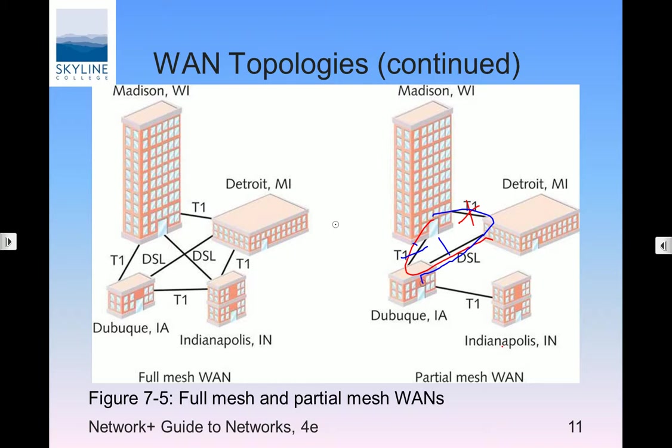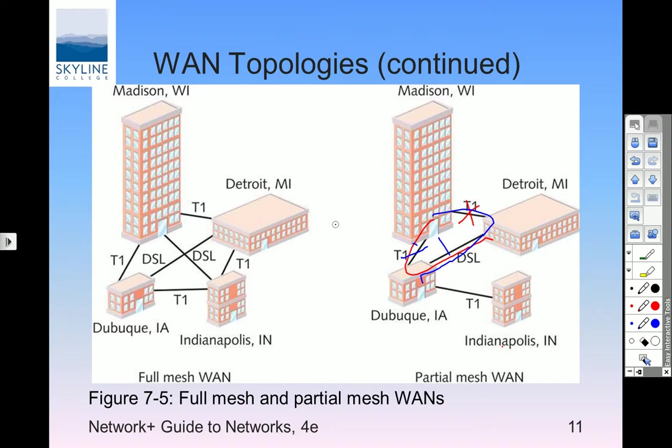When you overload a Layer 2 switch, it goes into hub mode — that's called MAC flooding. If you want to see all traffic because normally you only see traffic destined to you and broadcast traffic, you flood the switch with MAC addresses. Once the MAC table becomes full, it becomes a hub. Are there ways to stop that? Yes, and that's what the security classes are about. Can you make your network invulnerable to everything? No. Can you make it more difficult? Yes.